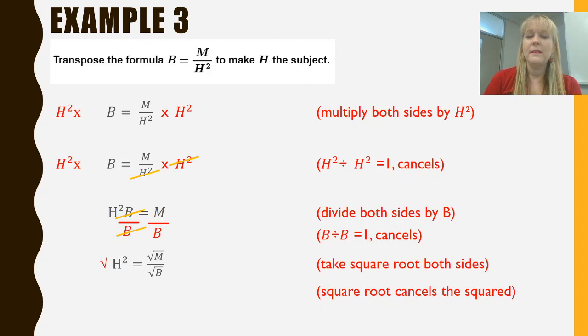I'm still not finished though because now I've got an h squared and I need it to be h as the subject. So we know that cancelling out a squared is done with a square root. So I'm going to take the square root of both sides. Now you can see on the right hand side of my equation where I had m over b before as a fraction, now I'm going to have the square root of m over the square root of b. I could have also written this a different way. I could have written the fraction m over b with a big square root over the top of it. But either way is acceptable. They both mean the same thing. Now we know that that square root on the left is cancelled out the squared. And so my final answer is going to be h is equal to the square root of m divided by the square root of b. Once again, I'm done.